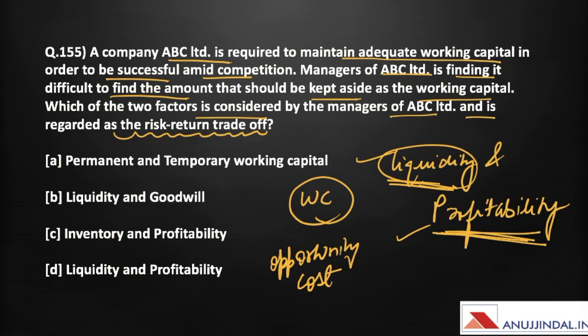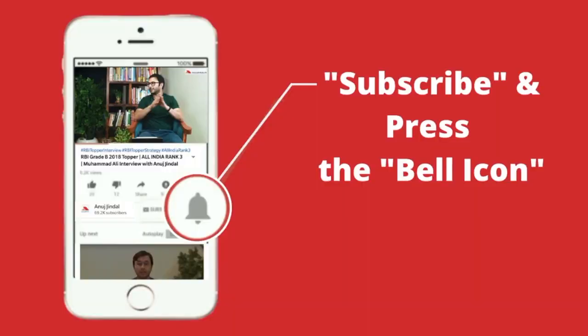Therefore, there is a trade-off between liquidity and profitability, and the answer is option D — liquidity and profitability. With this, we have completed five questions of finance for today. I hope you have understood each concept discussed. If not, do ask in the comment section below. If you like the video, subscribe to our channel and hit the bell icon. Thank you for watching.